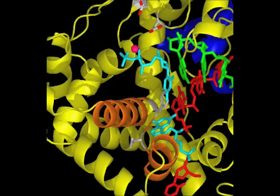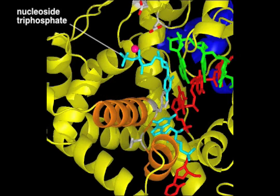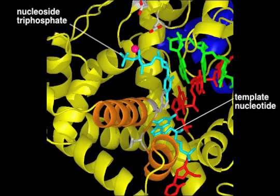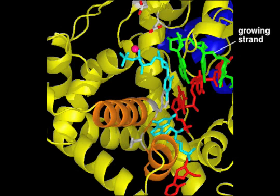In this view, the details of nucleotide selection at the active site are shown, with the incoming nucleoside triphosphate and the template nucleotide in light blue. The growing strand is green and the template strand is red.